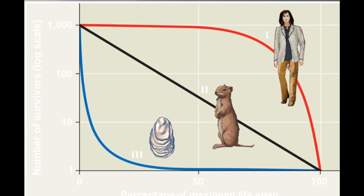Survivorship curves can be classified into three general types. Type 1 has low death rates during early and middle life and then an increase among older age groups. Type 2, shown in the middle, is where the death rate is constant over the organism's lifespan. Type 3 has a high death rate for the young, then a slower death rate for survivors. Make sure you get those descriptions in your notes.